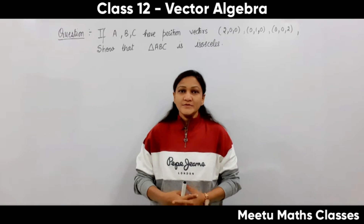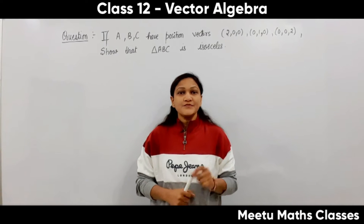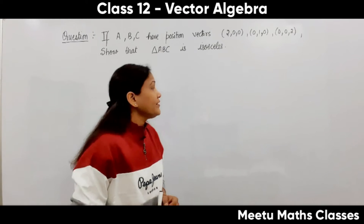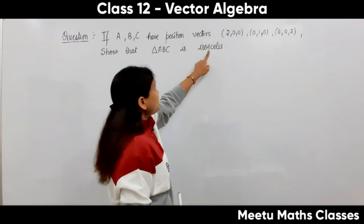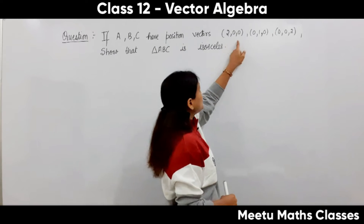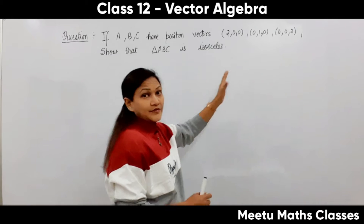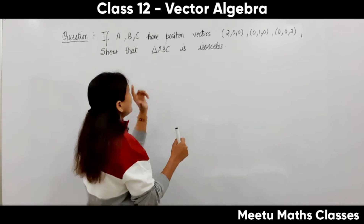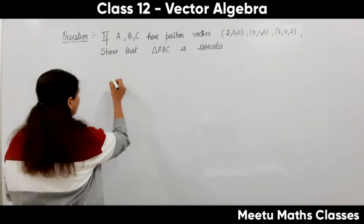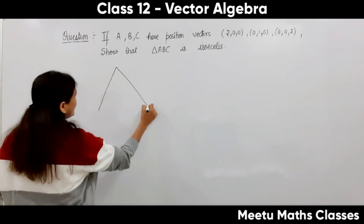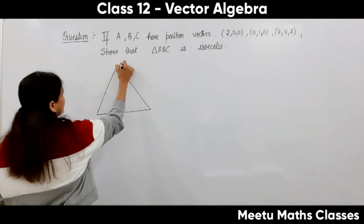Hello students, welcome to Maths class. Today's topic is vectors and your question is: if A, B, C have position vectors 2,0,0 and 0,1,0 and 0,0,2. We are given three points with their position vectors, so let us take these three points as A, B, C.